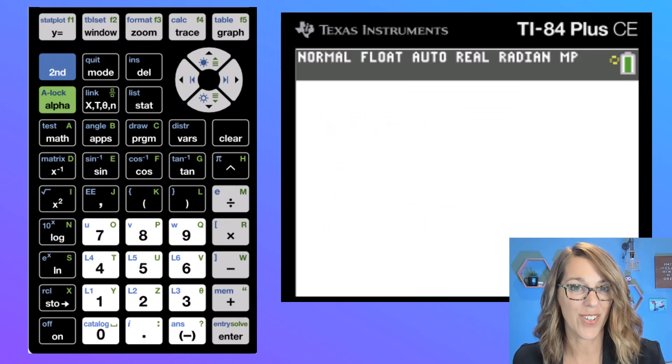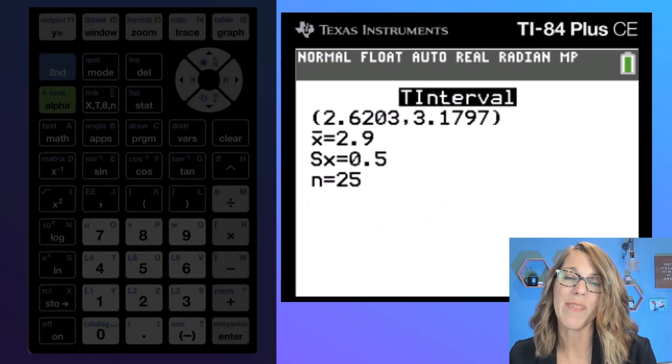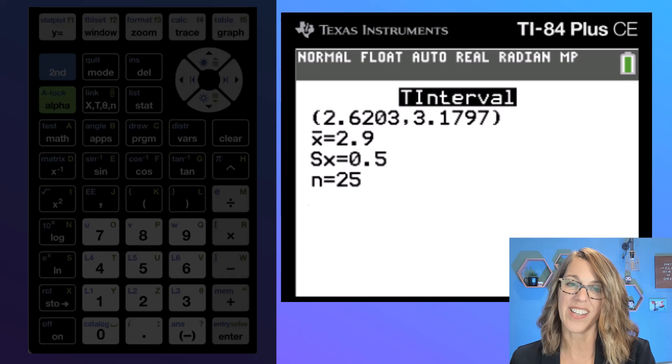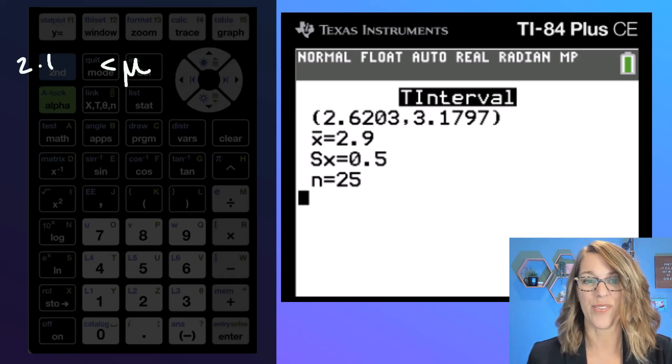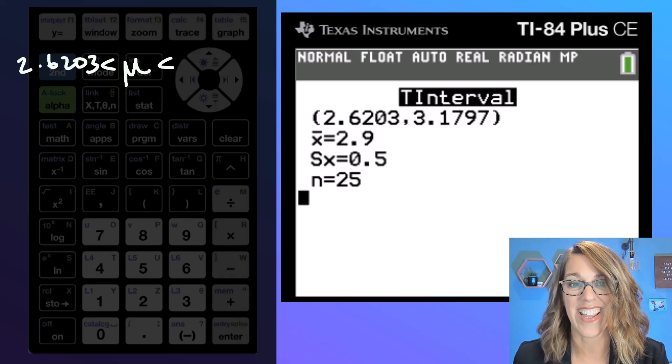As I arrow down and hit enter to calculate, I see that I'm 99% confident that the actual average GPA for those students is between 2.6203 and 3.1797.